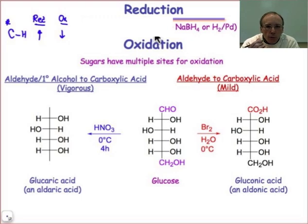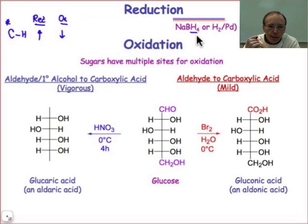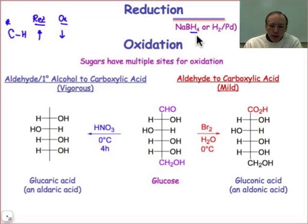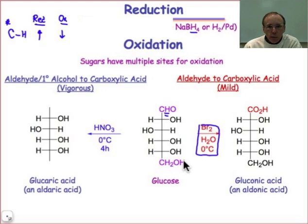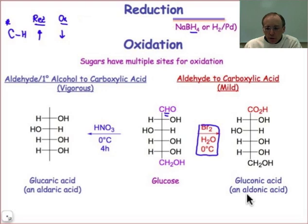We saw that in the open chain form of glucopyranose, the carbonyl form, we could undergo a reduction process with sodium borohydride, where H minus acted as the nucleophile to add into the carbonyl, converting it into the alcohol with an increase in carbon-hydrogen bonds at C1. Here we'll look at oxidation: under mild conditions — bromine in water at 0°C — glucose undergoes oxidation only at C1 to make the carboxylic acid. The carboxylic acid derivative of glucose is known as gluconic acid, or in general for any aldose, it's called an aldonic acid.